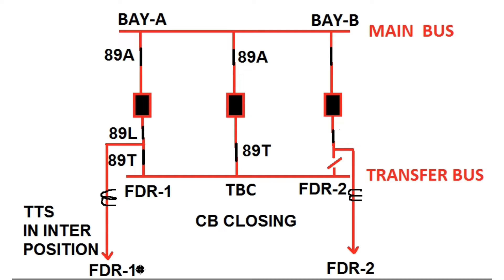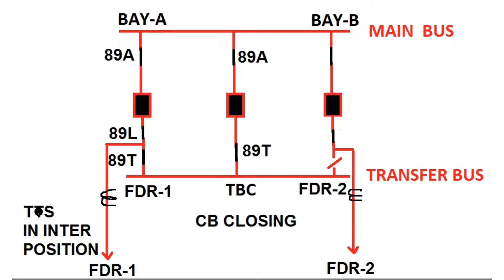In feeder 1 there exists a CRP panel, and in the CRP panel there exists a trip transfer switch. First we have to move this trip transfer switch to the inter position. After making this switch in inter position, we have to close 89A, 89T isolators of this feeder 1 bay. After this, the TBC breaker needs to be closed — unless the TTS switch of feeder 1 is made into inter position, we cannot close the TBC breaker.